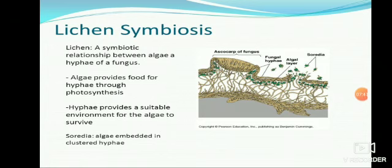In Lichens symbiosis, there is a symbiotic relationship between algae and hyphae of fungus. The algae provides food for hyphae through photosynthesis, while hyphae provide a suitable environment for the algae to survive. Soredia consists of algae embedded in clustered hyphae.